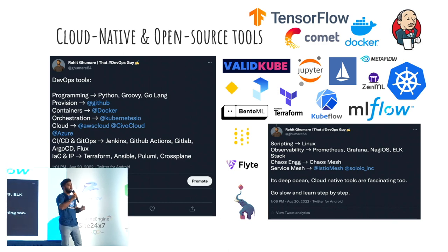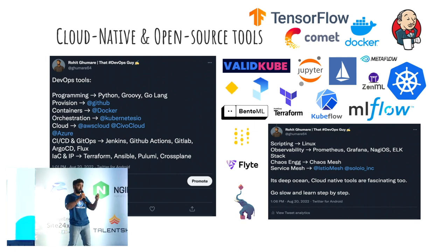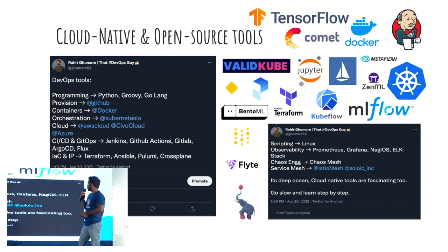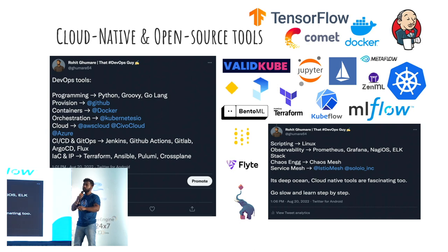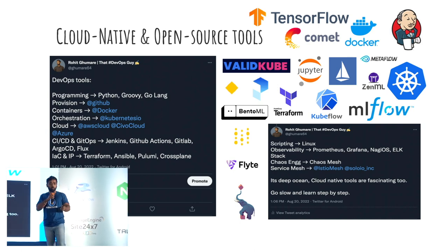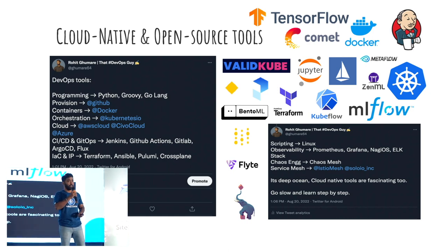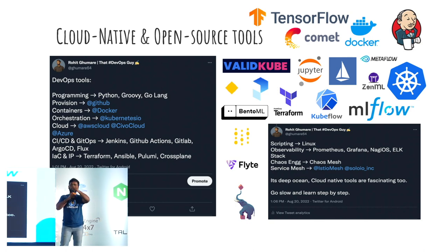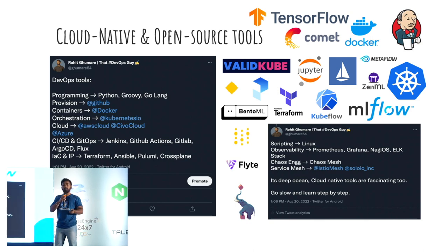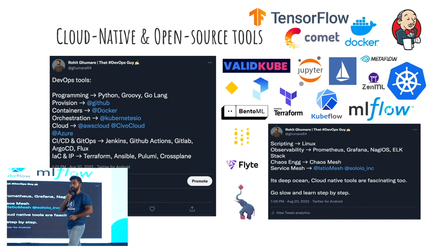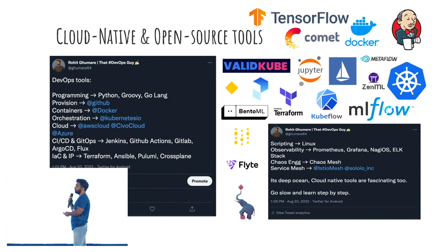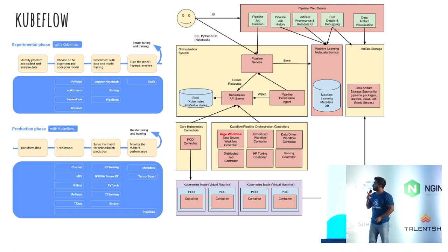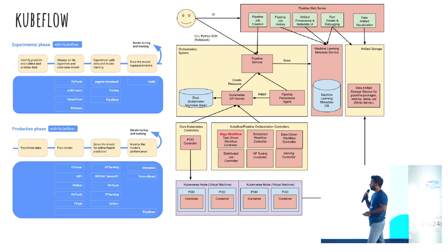It's not just about putting a Jupyter notebook into production and calling it MLOps — there are a lot of things to do. You need to understand how training works. You can't just pick one tool and do everything. As an example, let's look at Kubeflow. In the experimental phase, you are doing data cleaning and iterating various things. If you are a machine learning engineer or data scientist, you'll identify the problem, collect and analyze data, do data cleaning and processing.